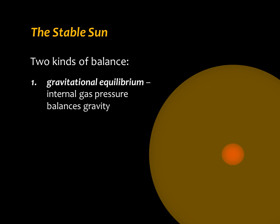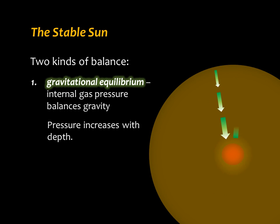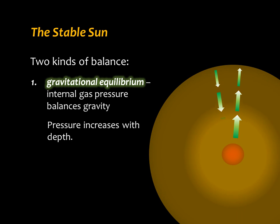The sun continues to shine steadily today because it has two kinds of balance that keep its size and energy output stable. The first kind is called gravitational equilibrium — the balance between the outward push of internal gas pressure and the inward pull of gravity. The sun's internal pressure balances gravity at every point within, keeping the sun stable in size.